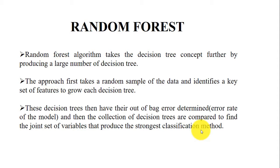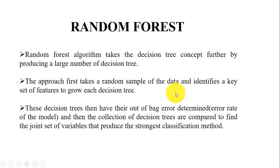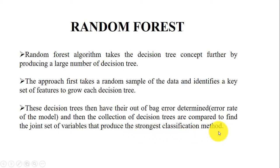For the movie review analysis, we have used the random forest classifier for analysis and prediction. Random forest algorithm takes the decision tree concept further by producing a large number of decision trees — a forest being a combination of trees. The approach first takes a random sample of data and identifies a key set of features to grow each decision tree. These decision trees then have their out-of-bag error determined, and the collection of decision trees are compared to find the joint set of variables that produce the strongest classification result.